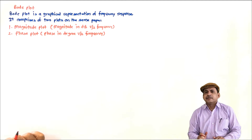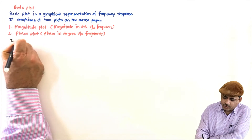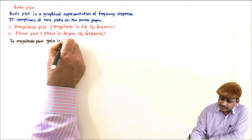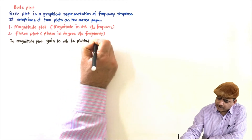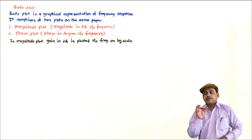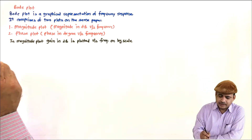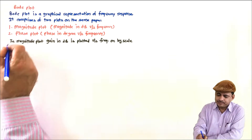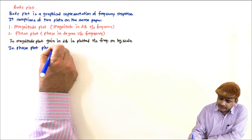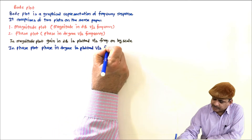The graph paper used here is a semi-log paper. In the magnitude plot, gain in dB or magnitude in dB is plotted versus frequency on log scale. So frequency is on the logarithmic scale, or if you use normal graph paper, then it is magnitude in dB versus log omega. In the phase plot, phase in degrees is plotted versus frequency on log scale.